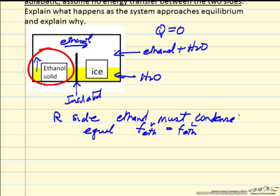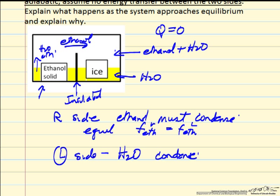By the same reasoning, on this side we have water and ethanol in the vapor phase. So on the left side, water will condense. Again, trying to get to equilibrium where the fugacity of water in the liquid phase and the fugacity of water in the vapor phase are the same. Initially water fugacity is higher in the vapor phase.